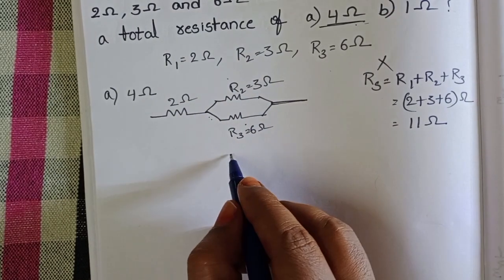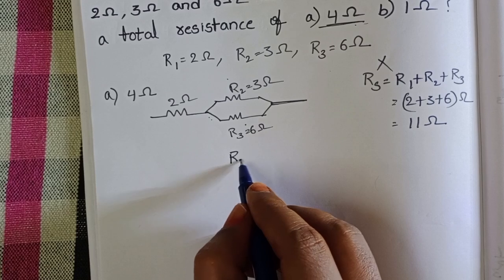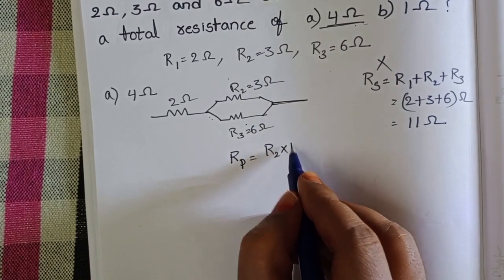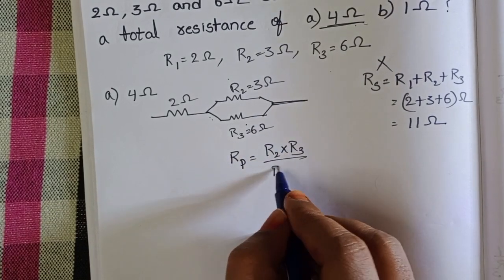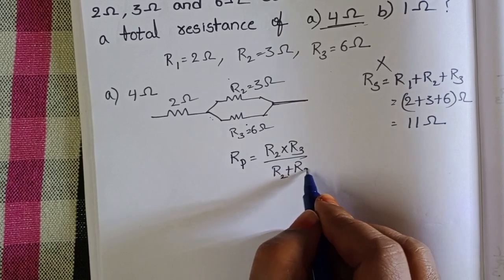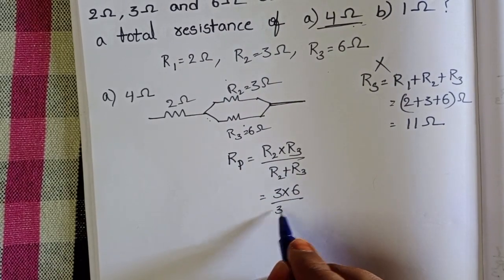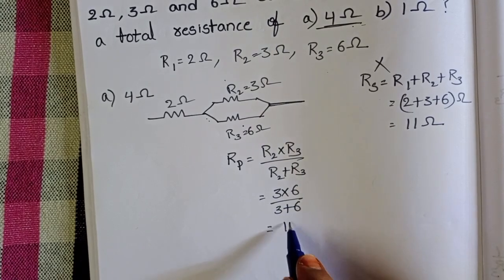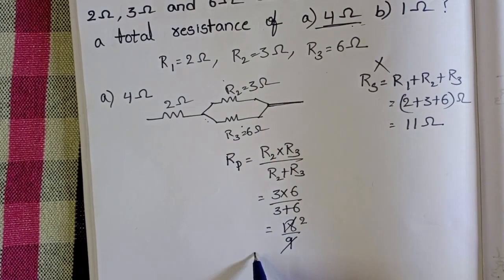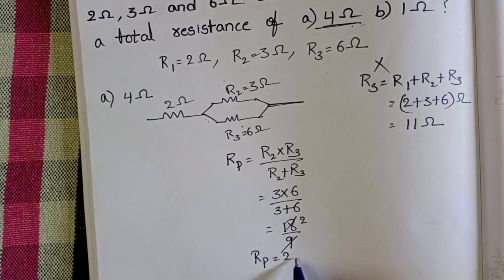These two are in parallel combination. Equivalent resistance is equals to R2 into R3 by R2 plus R3. 3 into 6 by 3 plus 6. 18 by 9, 2 ohms.